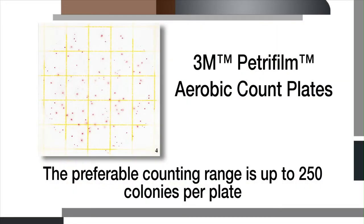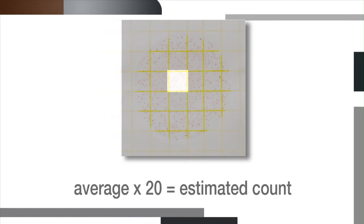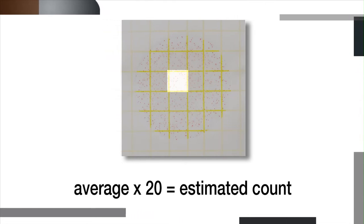The preferable counting range for the 3M PetriFilm aerobic count plate is up to 250 colonies per plate. For counts over 250 colonies, you can estimate the count. To do this, first count the total colonies in one or more representative squares and determine the average number per square. Multiply that number by 20, which is the inoculated area of the plate. The result is your estimated count.